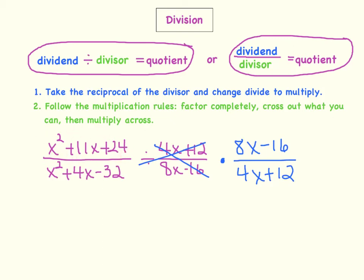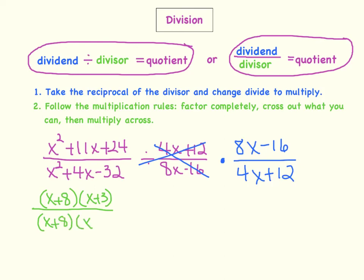Now we are ready to follow our multiplication rules. Let's look at this numerator — I need to find the factors of 24 that add up to 11. Those factors are 8 and 3, so I'm going to factor the numerator to x plus 8 times x plus 3. Now let's look at the denominator. I have to find the factors of negative 32 that add up to 4. That would be 8 and negative 4, since 8 minus 4 is 4 and 8 times negative 4 is negative 32. So the denominator factors to x plus 8 times x minus 4. We've just factored the first fraction.